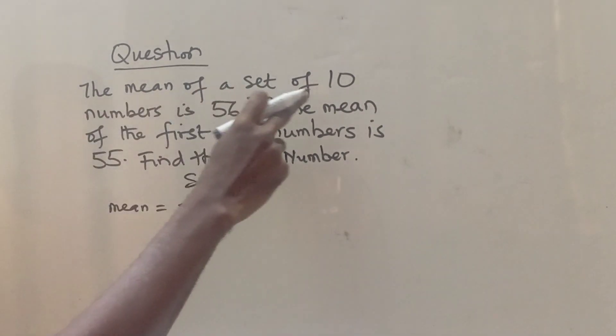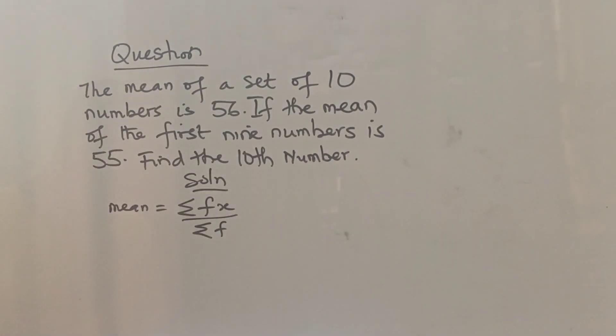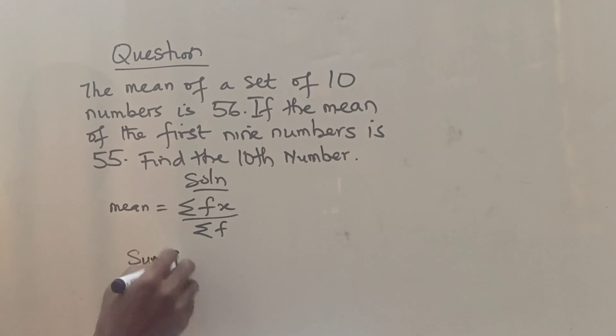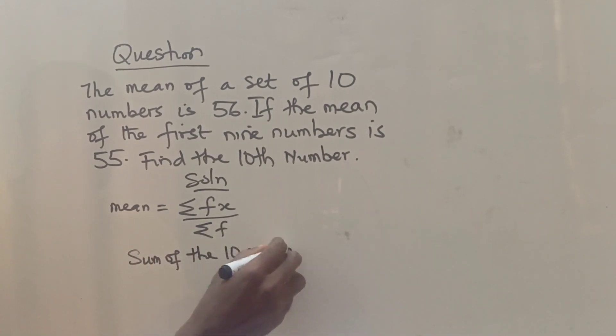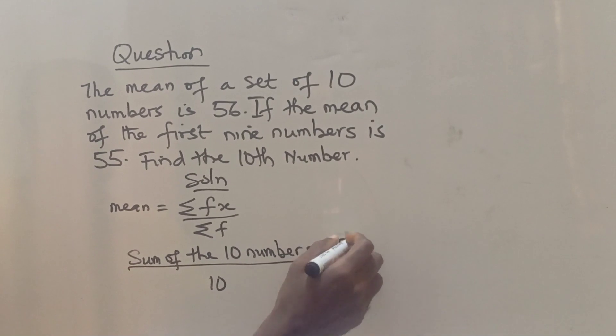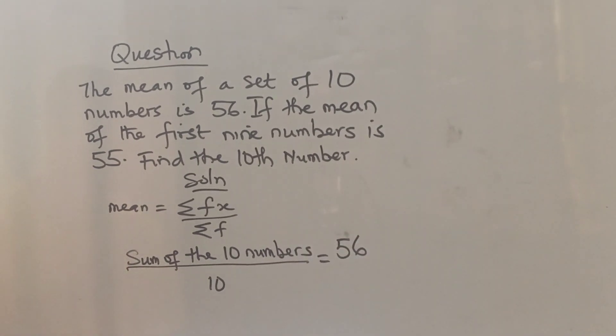It means the sum of the 10 numbers divided by 10 gives us 56. That's what it means. All right, so now if the mean of the first nine numbers is 55...